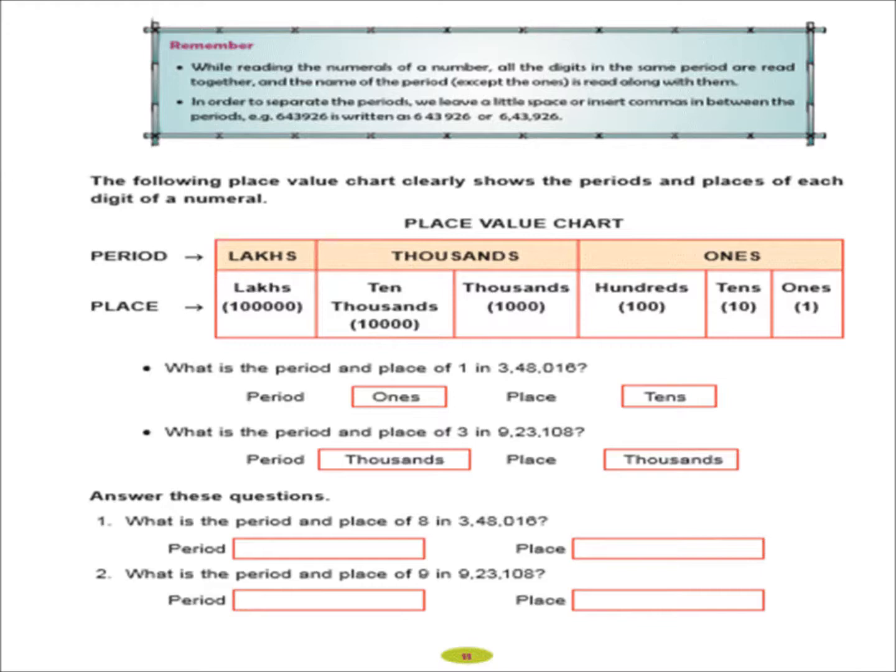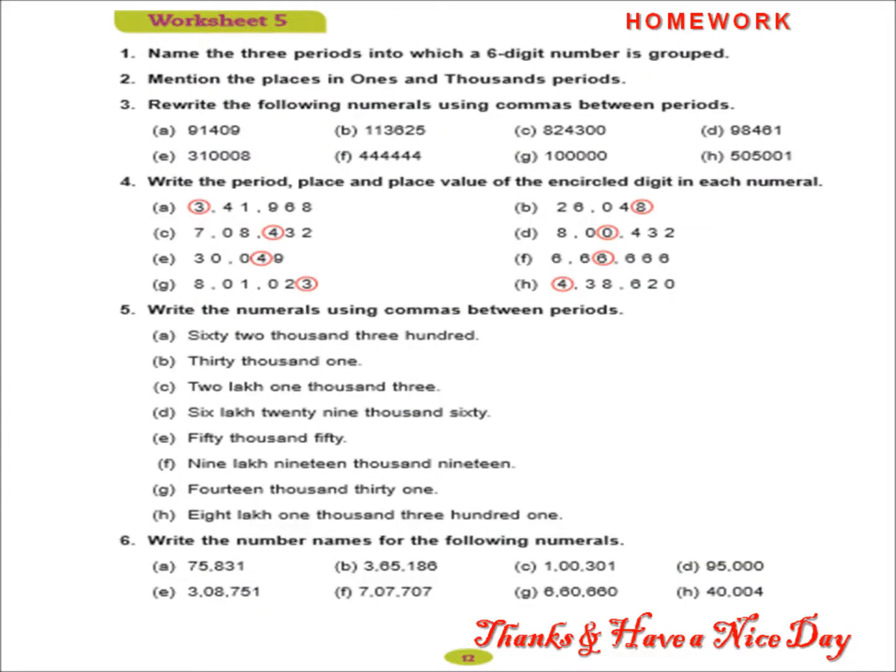So, now I am going to ask 2 questions with you. One first question is, what is the period and place of 8 in 3,48,016? Can you reply? Here, once again, I am giving you the answer. So, period is lakhs and place is lakhs. As I explained to you earlier about period and place value. Now, I think all of you have clear concept of it. Now, I am going to give you assignment. Try to solve it. I will give you the solutions in the next class.